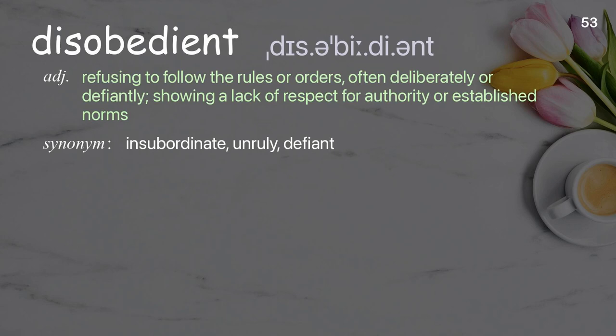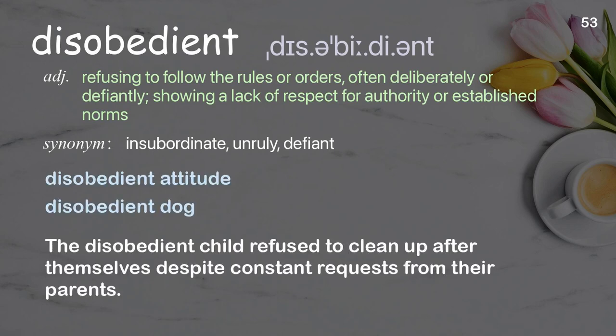Disobedient: refusing to follow the rules or orders, often deliberately or defiantly; showing a lack of respect for authority or established norms. Examples: disobedient attitude, disobedient dog. The disobedient child refused to clean up after themselves, despite constant requests from their parents.